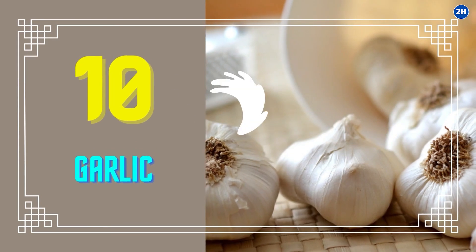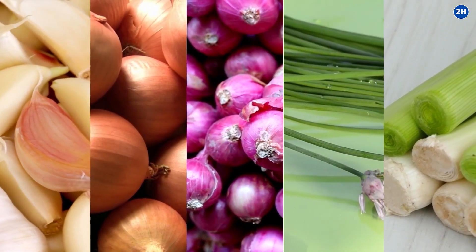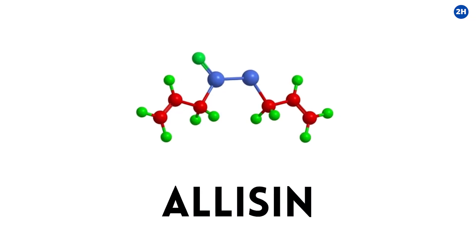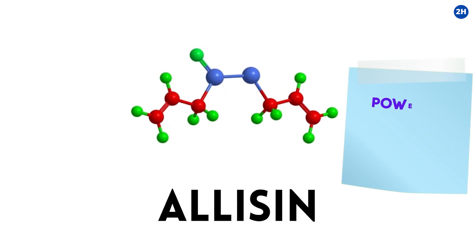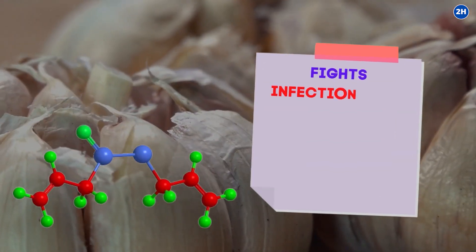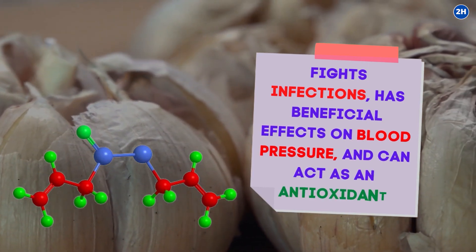10. Garlic. Garlic, onions, shallots, chives, and leeks all contain allicin. Allicin is an organic sulfur compound that has some powerful anti-inflammatory properties. It also fights infections, has beneficial effects on blood pressure, and can act as an antioxidant.